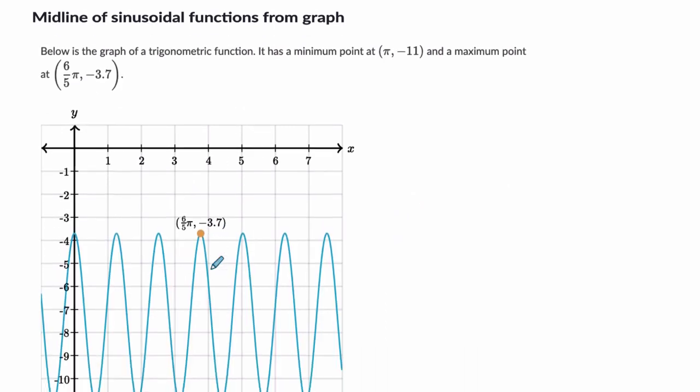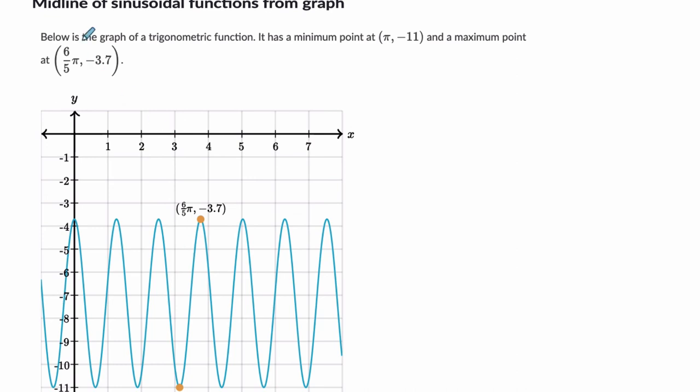So finally, we'll look at this one. We're told that in this graph, the minimum is at pi, negative 11. I see that there. And it has a maximum at 6 pi over 5, negative 3.7 here. What is the equation for the midline?